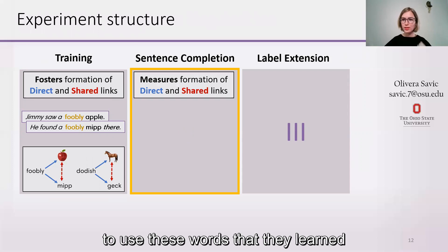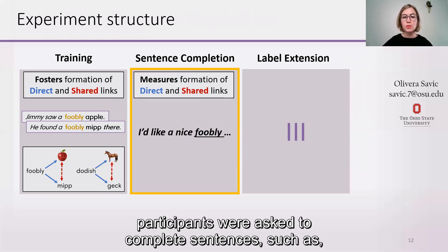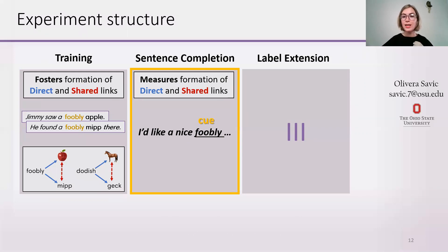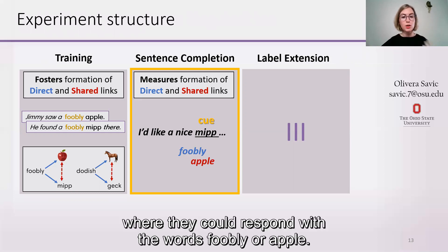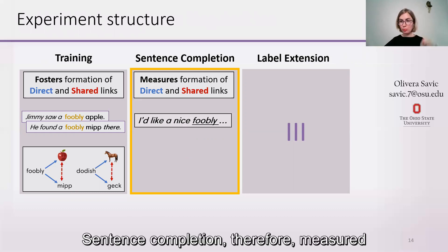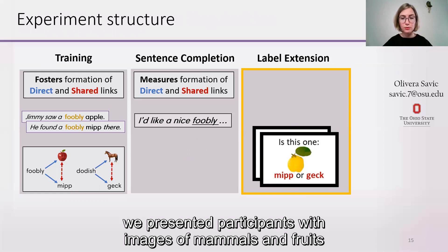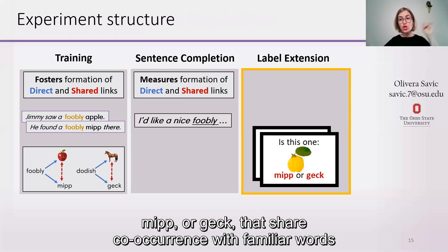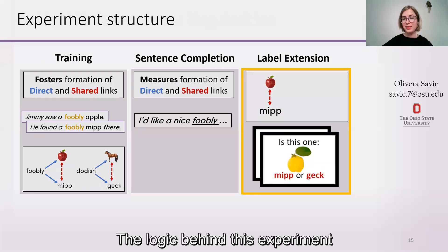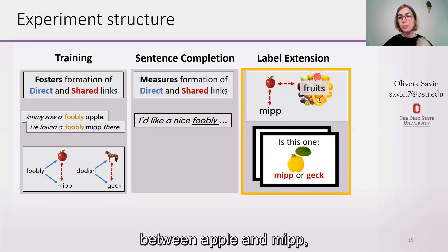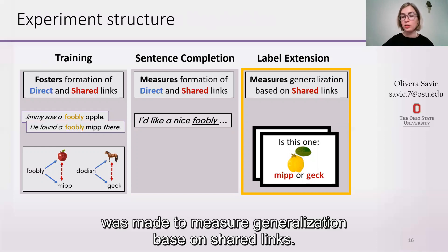Participants were later asked to use the words they learned in a sentence completion task, designed to measure formation of direct and shared links. In the sentence completion task, participants were asked to complete sentences such as 'I'd like a nice foobly,' and they could respond apple or mip if they learned anything from training, or sentences such as 'I'd like a nice mip,' where they could respond foobly or apple. In the label extension task, we presented participants with images of mammals and fruits, and asked them to label them with one of the novel words — mip or gank — that shared co-occurrences with familiar words from the family of fruits (apple) or mammals (horse). The logic was that if participants formed a link between apple and mip, they should be able to generalize this link to other fruits.